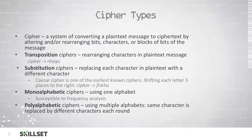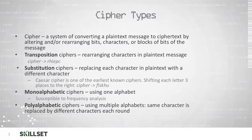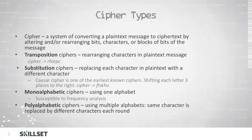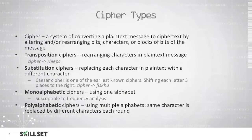With a transposition cipher, we simply rearrange characters in a plain text message. As you can see here, we have the word 'cipher,' which then becomes R-H-I-E-P-C. We aren't really disguising any of the letters — we're just moving them around.